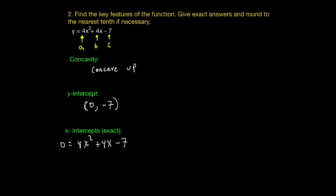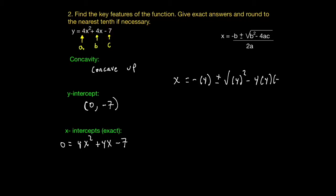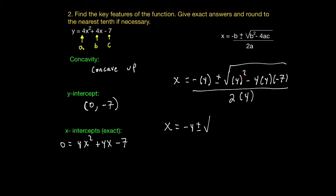Since I've already identified the a value, the b value, and the c value, I'm going to plug them in. So I get x equal to negative b, which is 4, plus or minus the square root of b squared minus 4 multiplied by the a value and the c value — so 4 and negative 7 — all divided by 2 multiplied by a, so 2 times 4. Simplifying: x equals negative 4 plus or minus the square root of 16, and then negative 4 times 4 is negative 16, but negative 16 times negative 7 changes to plus 112, all divided by 2 times 4, which is 8. So x equals negative 4 plus or minus the square root of 128.